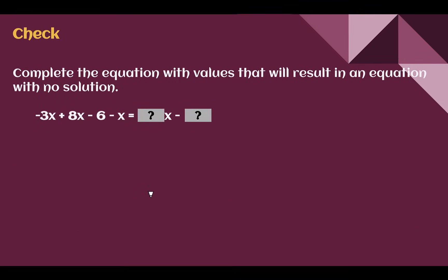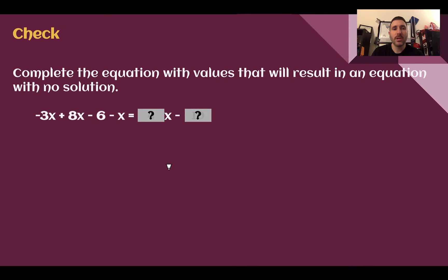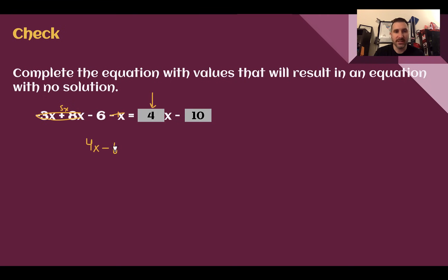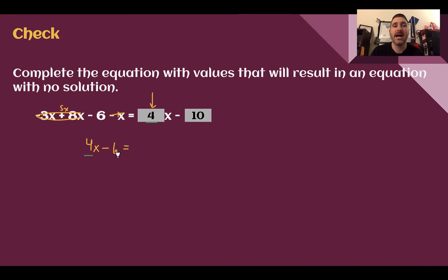Check your understanding: Complete this equation with values that result in no solution. Pause the video and complete the check. Here I put 4x minus 10 — the 4 has to be there, but if you chose a number other than 10, that also works. Negative 3x plus 8x is 5x, then 5x minus 1x is 4x, and then minus 6. So the coefficient must be 4. For the constant, I just can't choose 6 since the minus sign is already there. I could have put 4x plus 6 because negative 6 and positive 6 are not the same. I chose 10, but any number other than 6 works.